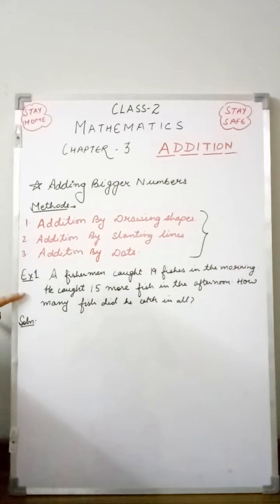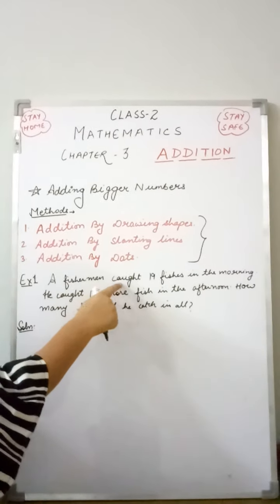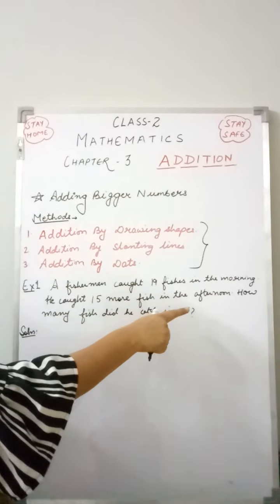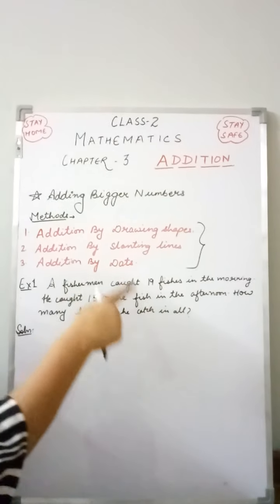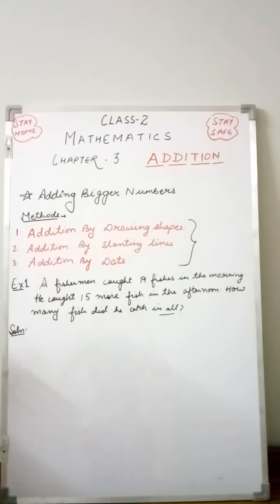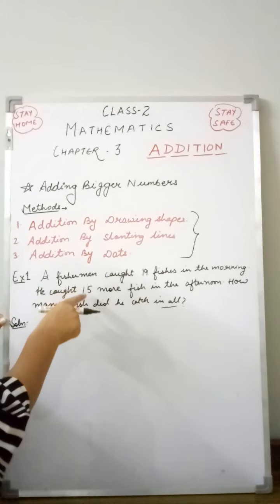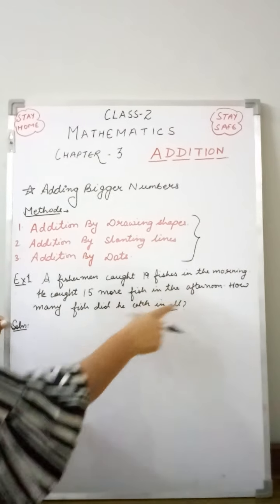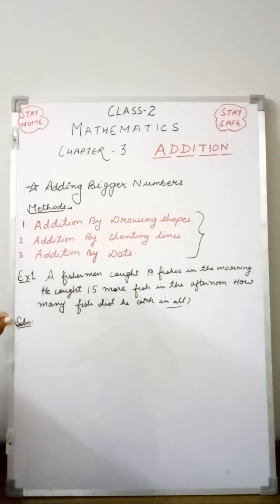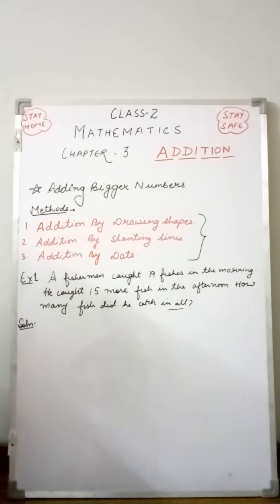This is the first example, for the first method: drawing shapes. A fisherman caught 19 fishes in the morning. He caught 15 more fish in the afternoon. How many fish did he catch in all? First of all, students, you have to understand what the question is asking. For drawing shapes addition, I have chosen a triangle as my shape.